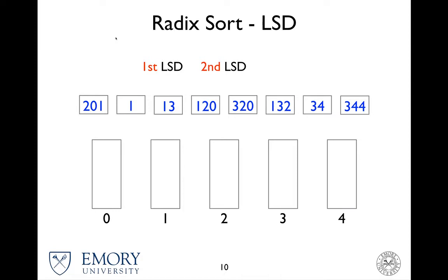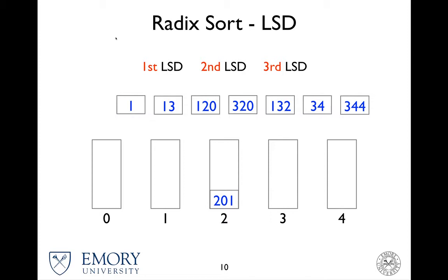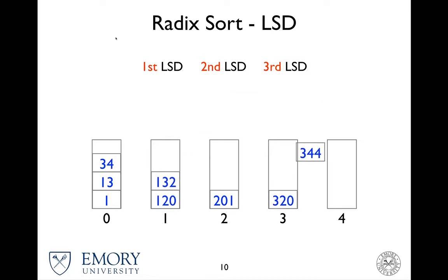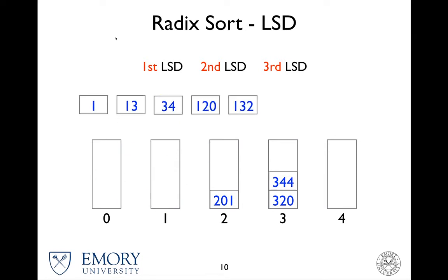Okay, third — we now use the last least significant digit, which is the third one. So 2, 0 — 1 has to go to 2. There's nothing for some, so again goes to 0. Then 0, 1, 3, 1, 0, 3. And simply put them back like this.